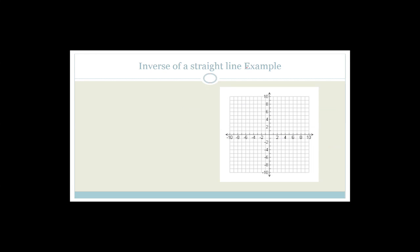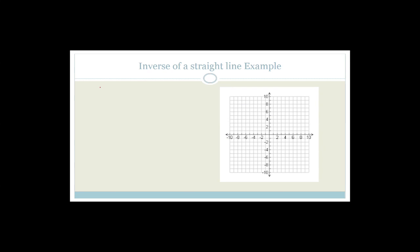So then we started talking about inverse functions, and we said that to find an inverse function, what do you do? You swap x and y and then solve for y. That's what we learned. So what we're going to do today is we're going to do a whole bunch of examples and then look at what happens to domain and ranges, et cetera. So let's get started with a fairly easy one — the inverse of a straight line.